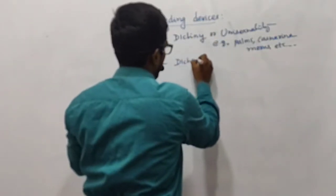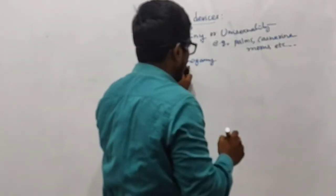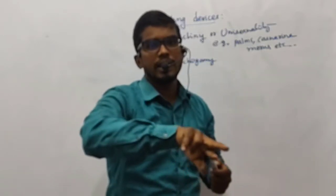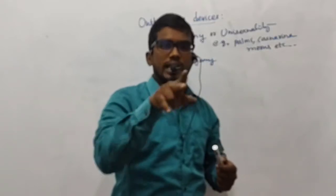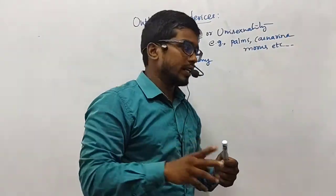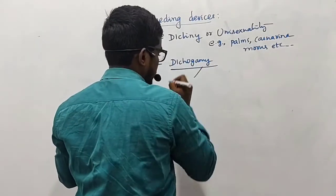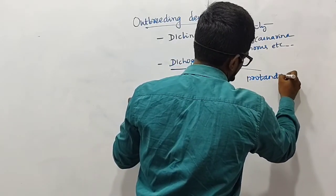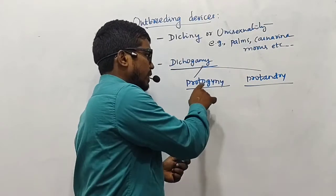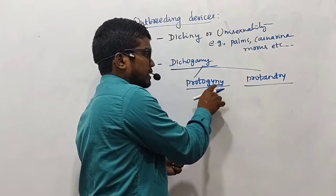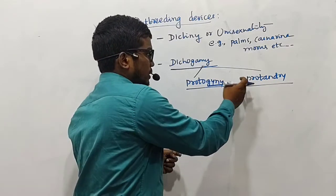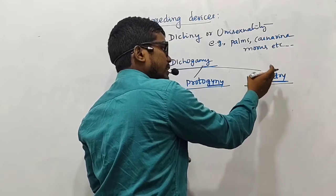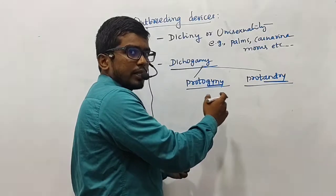Secondly, we have dicogamy. In dicogamy, the maturation of the stigma and the male reproductive parts — the stamens or anthers — will take place at different intervals of time. Under dicogamy, we have two types: protogyny and protandry. In protogyny, the maturation of the stigma occurs first, followed by the maturation of the anthers, with a time interval between the two.